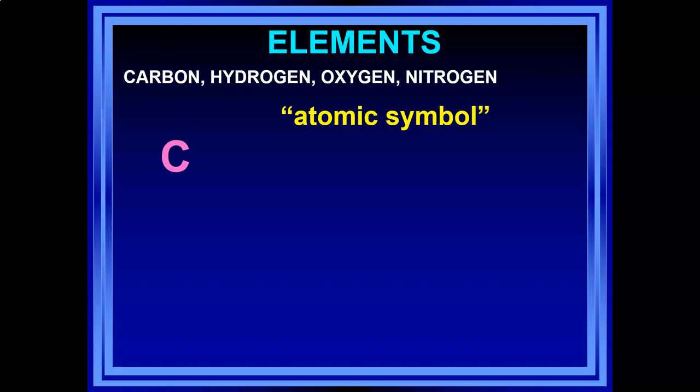For example: C for carbon, H for hydrogen, O for oxygen, and N for nitrogen. Those are pretty straightforward — just the first letter. That's not always the case, but for these four important elements in our body, it is.